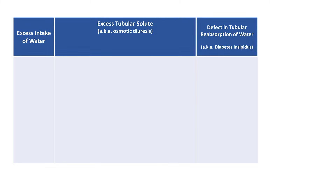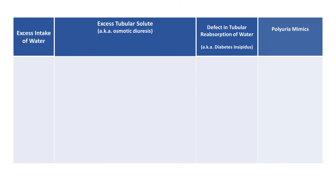The last category in the framework is polyuria mimics, which are conditions causing increased urine frequency without increasing total urine volume. Excess intake of water is not common, but when it occurs it may be the result of primary polydipsia, which itself is usually a manifestation of psychosis — thus the near-synonym psychogenic polydipsia.